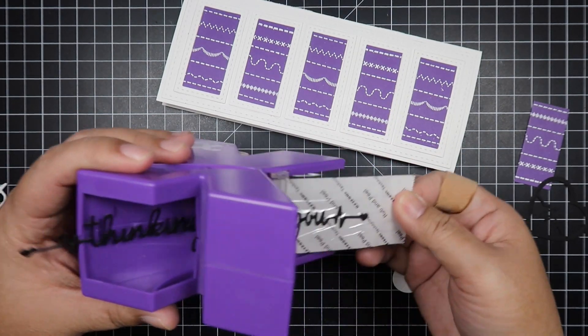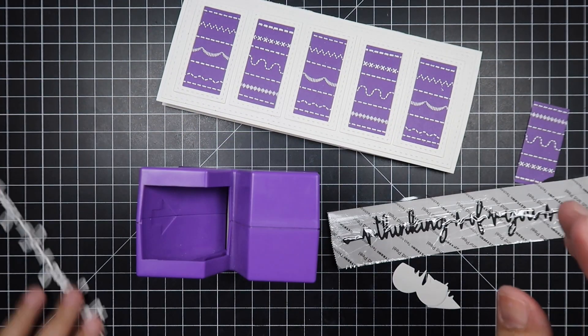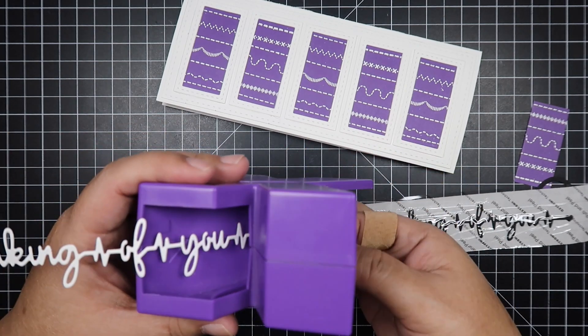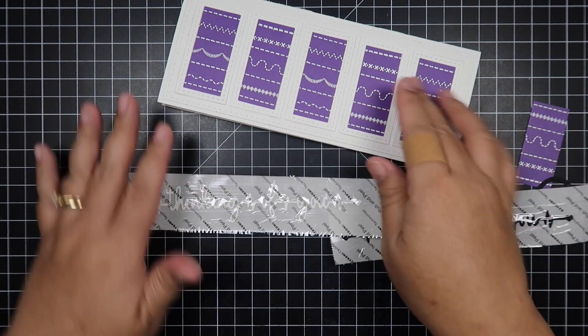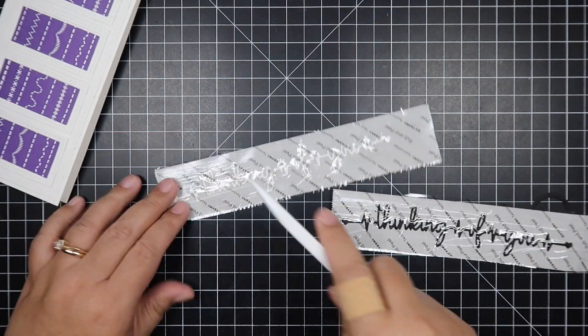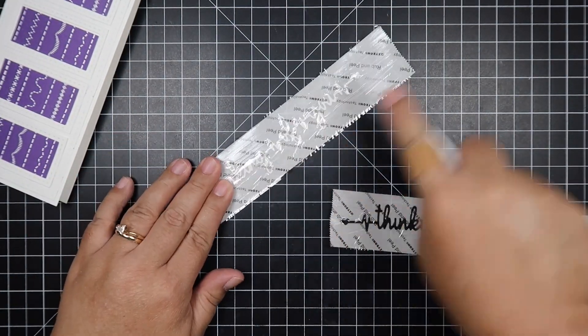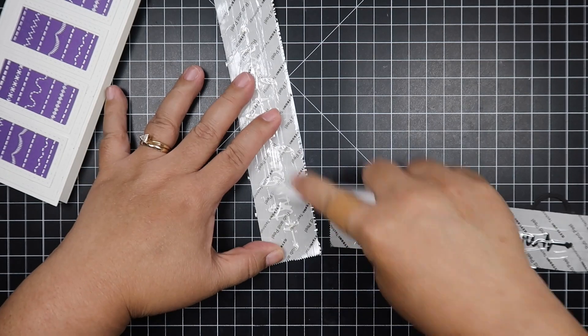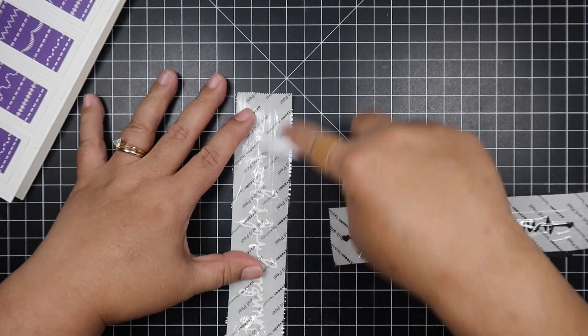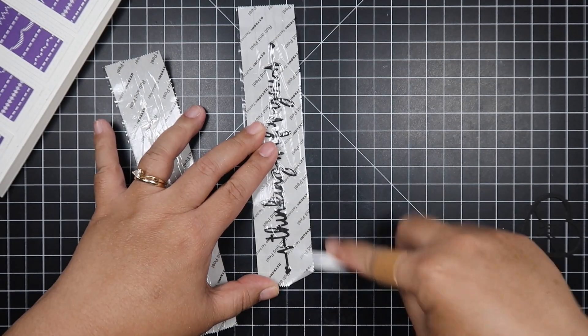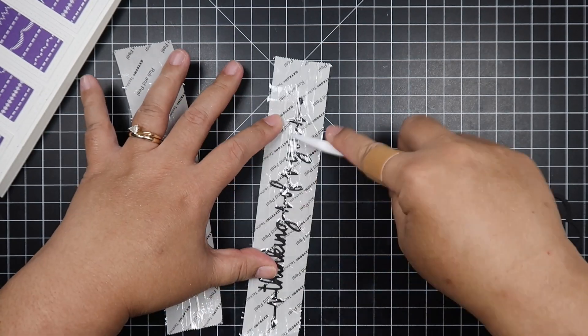Here's another one of my secret weapons: I use my Xyron sticker machine to adhere very intricate dies, especially word dies. I'm just going to burnish that down with my bone folder, trying to make sure that each of those nooks and crannies get adhesive. Nothing's going to stick out, so I'm just burnishing that down.